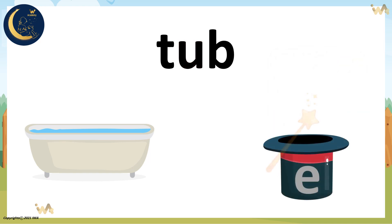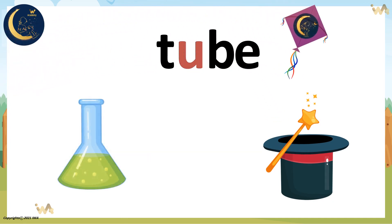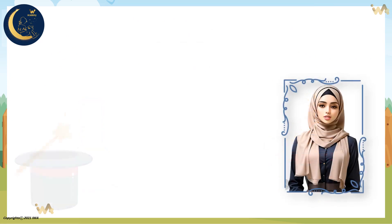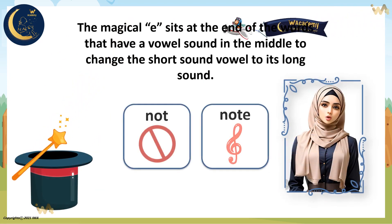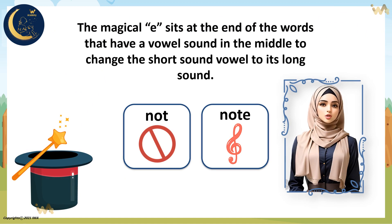When we use the power of the magical E, this word becomes tube. The short sound of the vowel is changed to its long sound. Don't forget that E is silent. The magical E sits at the end of words that have a vowel in the middle, to change the short sound of the vowel to its long sound.